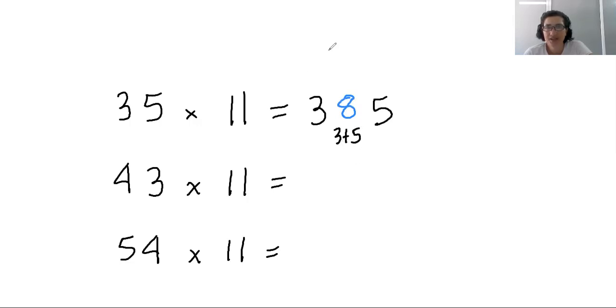So we do the same here. 43 times 11, we write the first digit and the last digit, and in between the two we write the sum. So this would be 4 plus 3, which is 7. So 473. Another example, we write 5, 4, 9 in the middle. So we have an answer of 594.